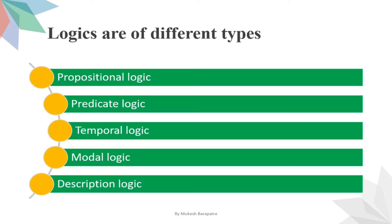By using logic, we have different types of representation schemes. The first is propositional logic, the second is predicate logic, the third is temporal logic, then modal logic, and descriptions logic. These are the different types of logic used in knowledge representations to represent our knowledge.